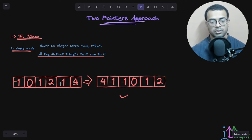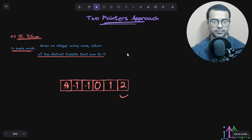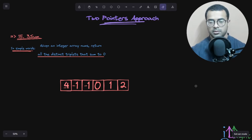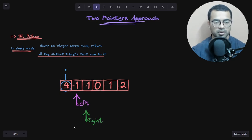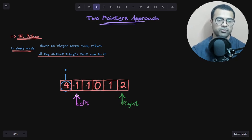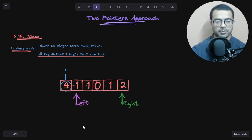Now we are going to introduce our pointers. First we have 'i', which will be used for the main traversal. Then we have 'left', which will start right after i — whenever i moves forward, left moves one step forward too. And we have 'right' positioned at the very end of the array.